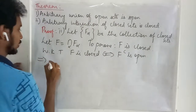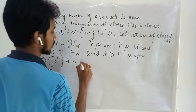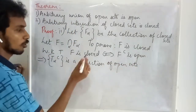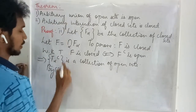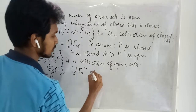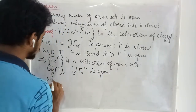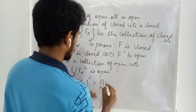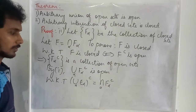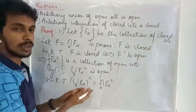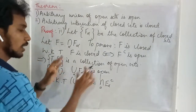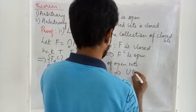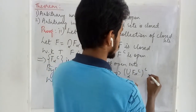Using this, the collection of complements F_alpha-complement is a collection of open sets. By the first part of the theorem, the union of this collection is open. We also know from De Morgan's law that the complement of the union of E_alpha equals the intersection of E_alpha-complements, which we have seen in the previous lecture. Since this union is open, the complement of the union of F_alpha-complement is closed.